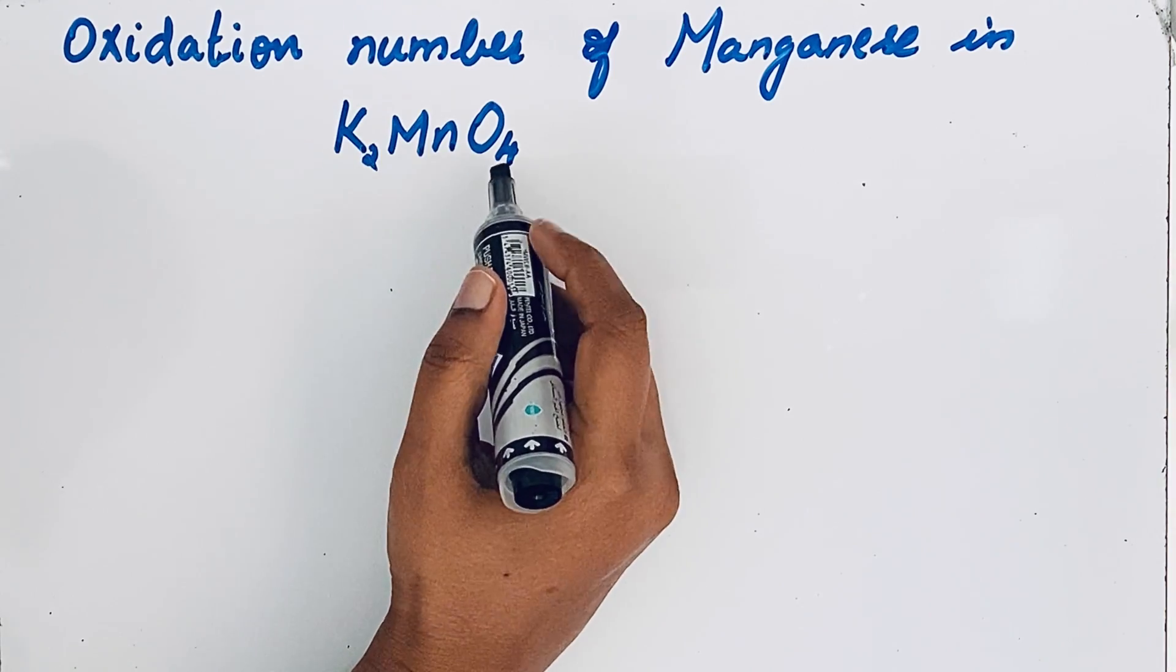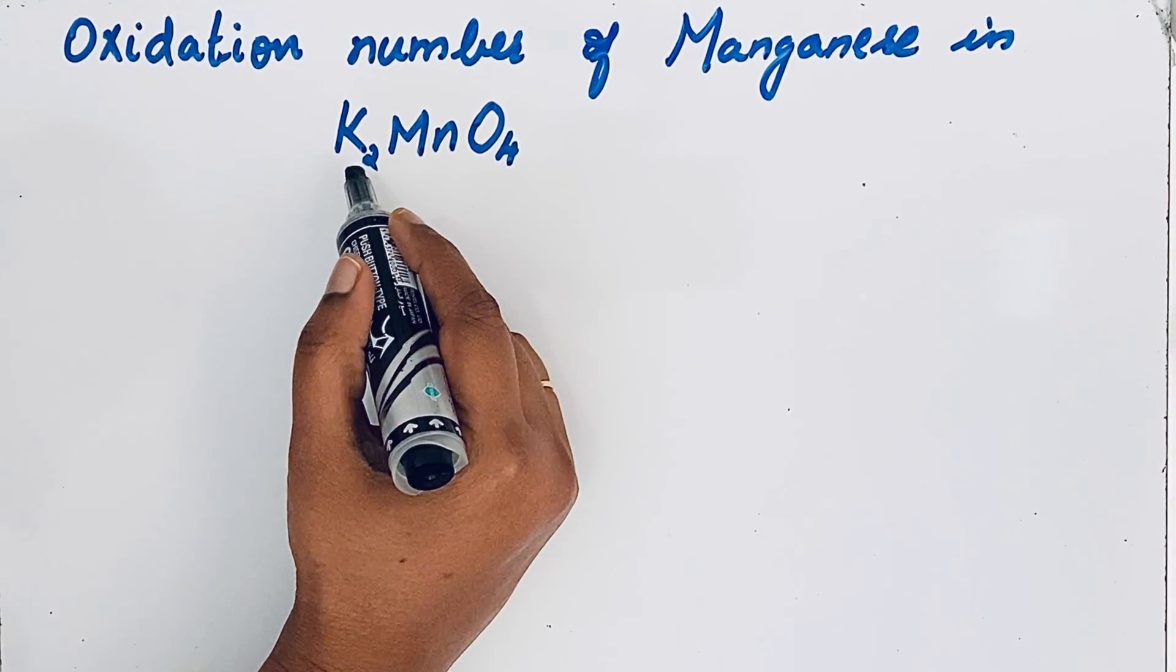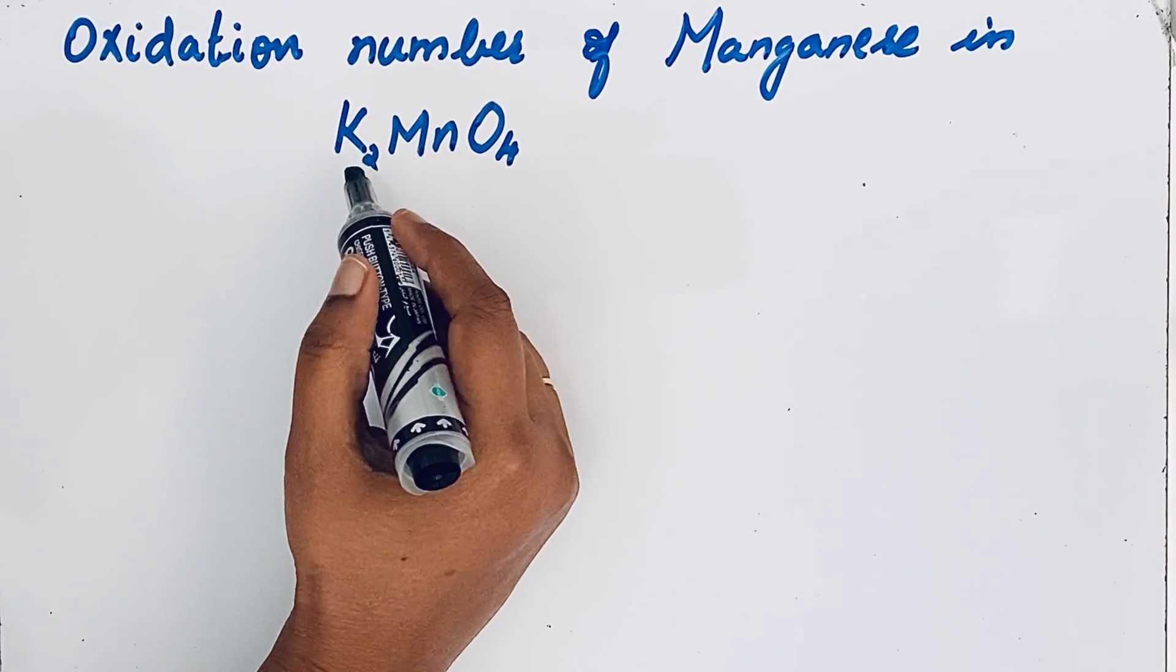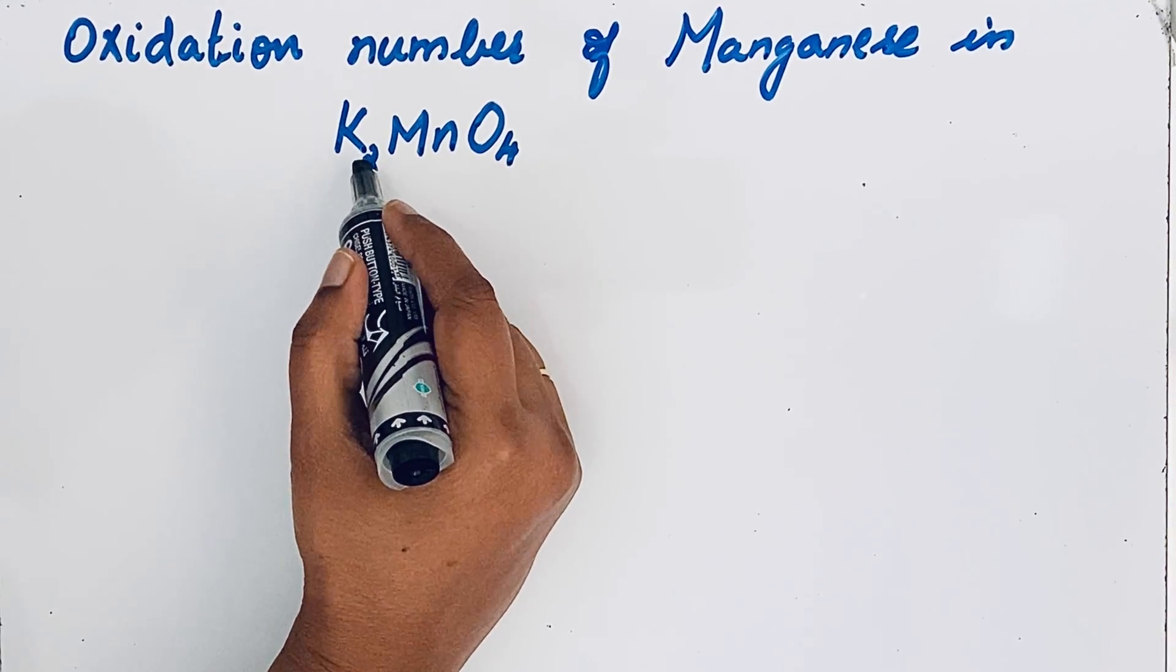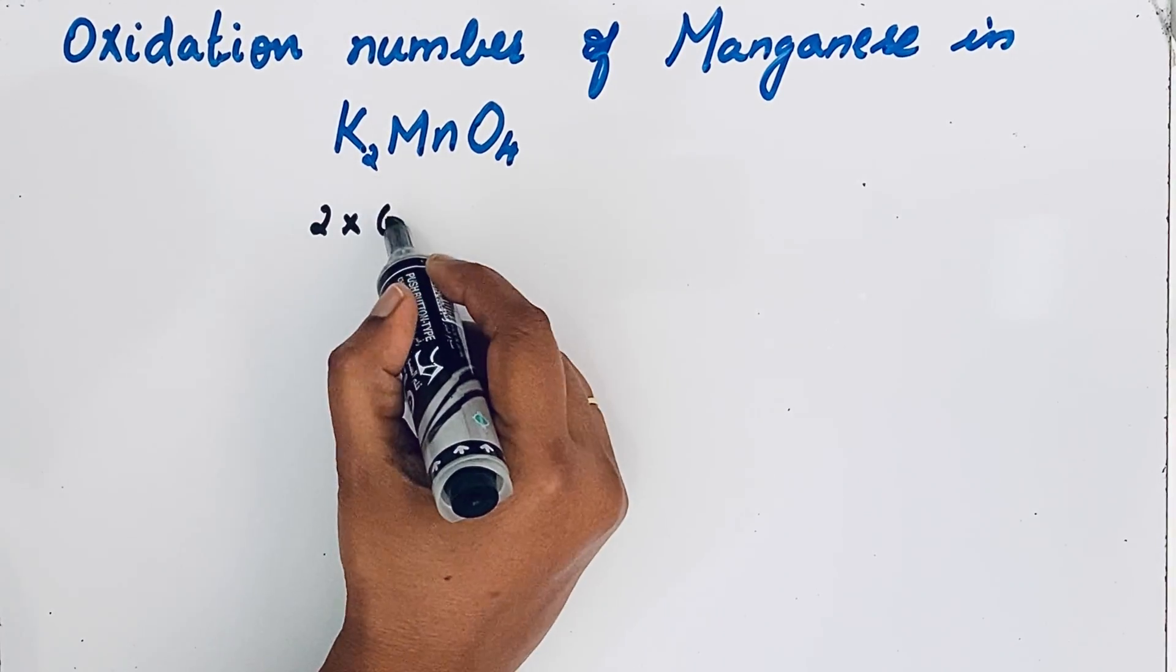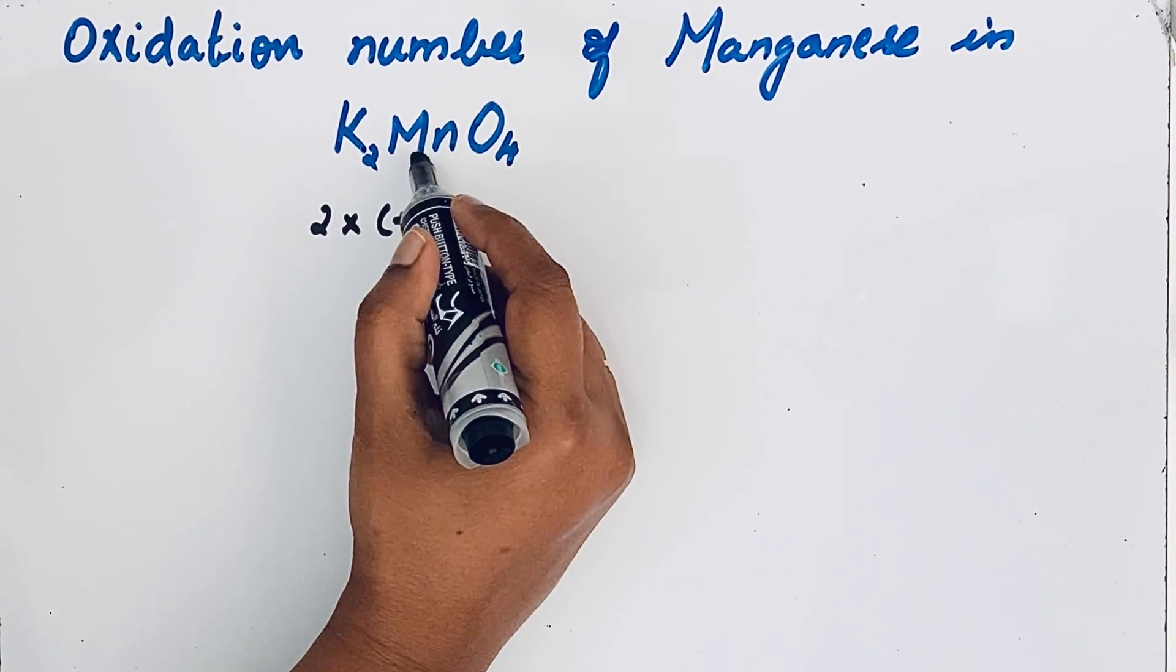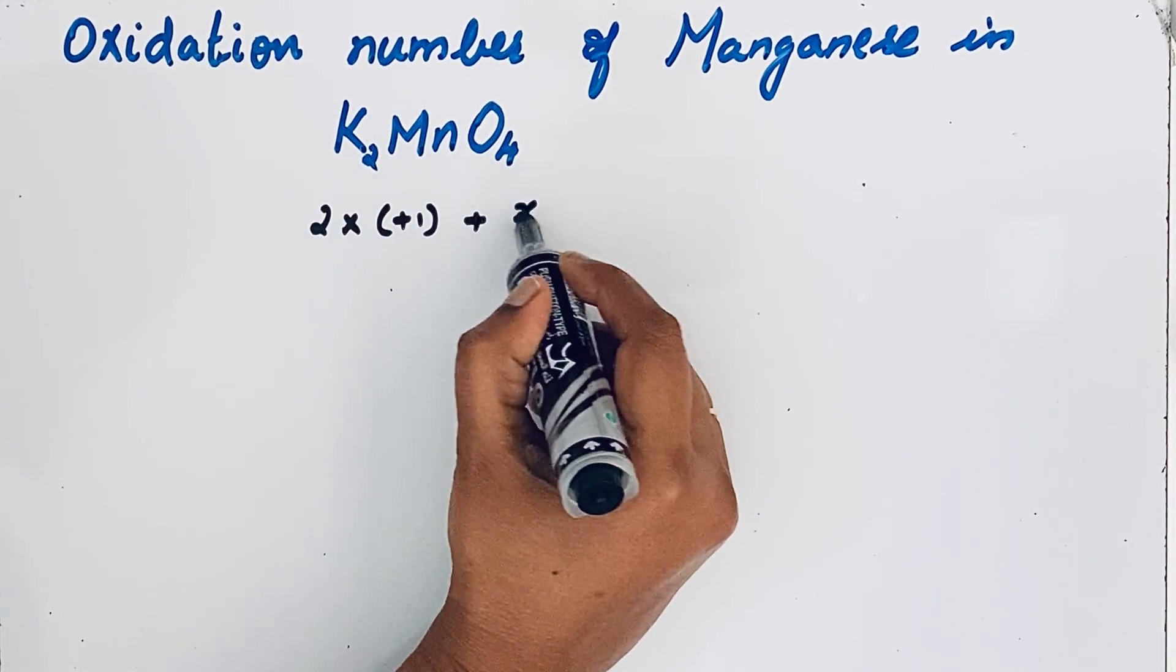So K2MnO4. Potassium is an alkali metal, so oxidation number is plus one. There are two potassium atoms, so two into plus one, plus manganese we are going to find. So let us keep it like x.